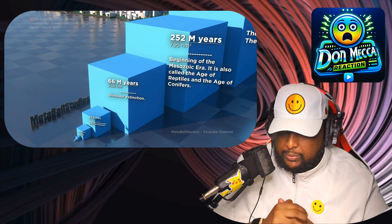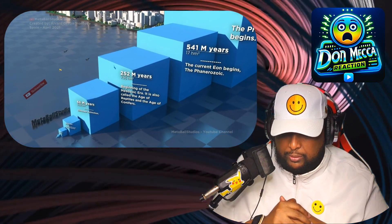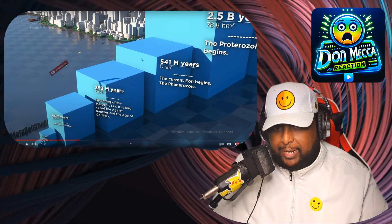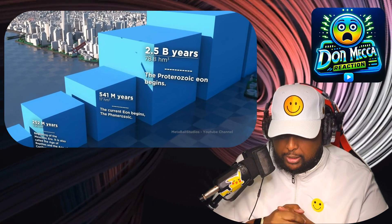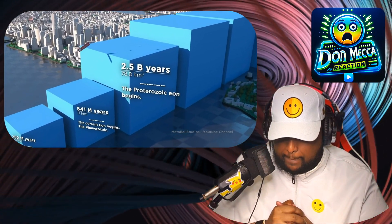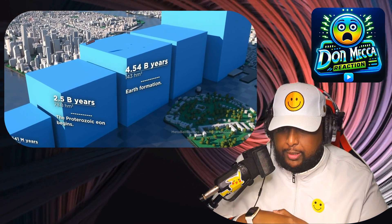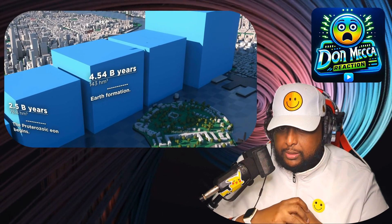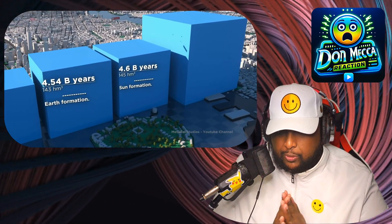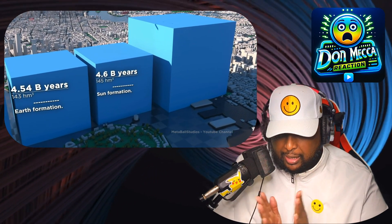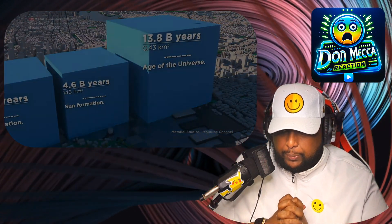Beginning of the Mesozoic era — also called the Age of Reptiles, the Age of Conifers. I like that they have a flying subscribe plane. 541 million years — current eon. 2.5 billion years — this is all like human history scale now. Earth formation: 4.54 billion years. Sun's formation: 4.6 billion years. So Earth came about just under that. 13.8 billion years.